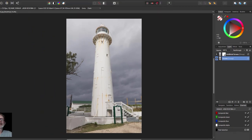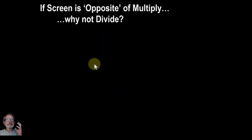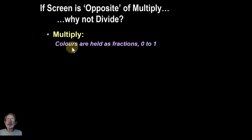So let's go back and have a look at what we're talking about. There's a big question here. If screen is the opposite of multiply in which you multiply layers, why all the kerfuffle? The opposite of multiply is divide. Well, in multiplying you're going to note that colors are held as fractions. So any color, red, green, and blue are all 0 to 1.